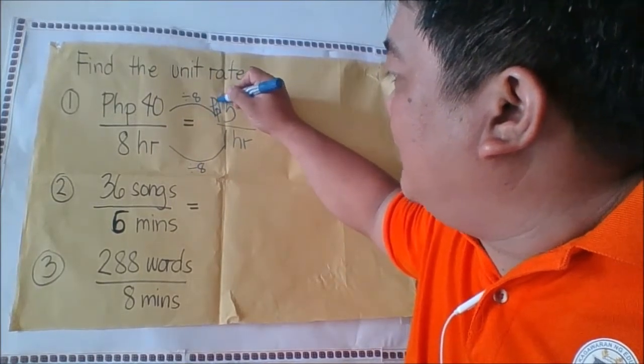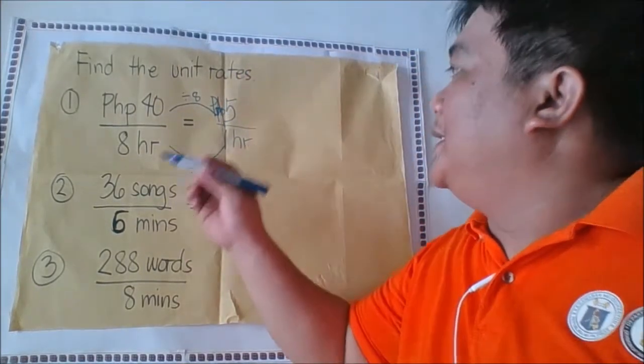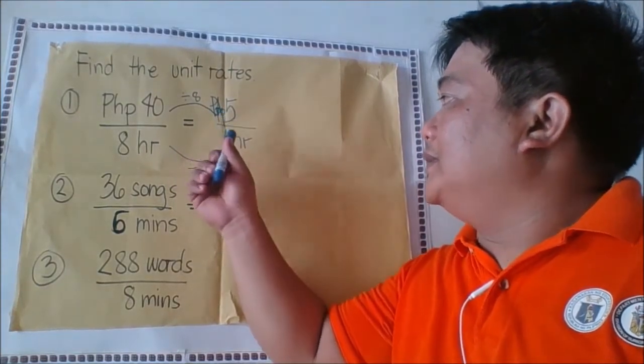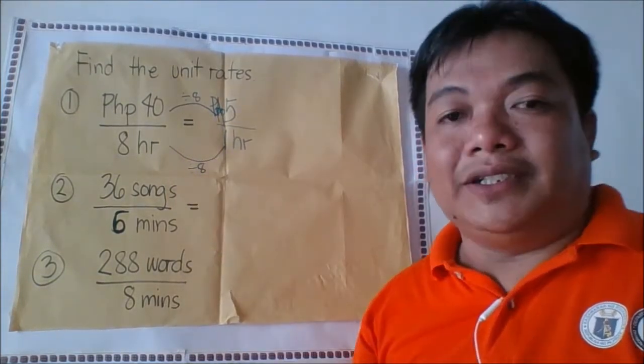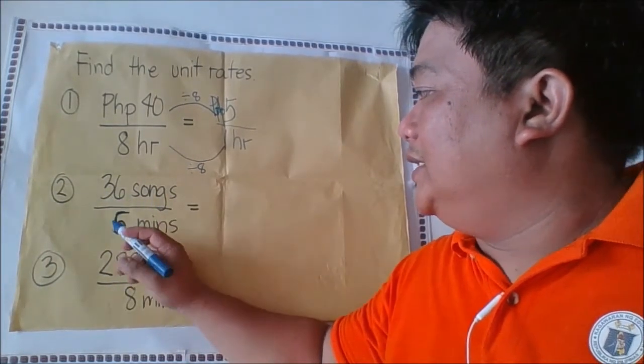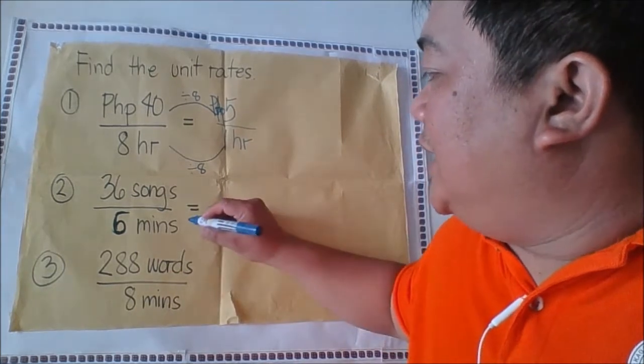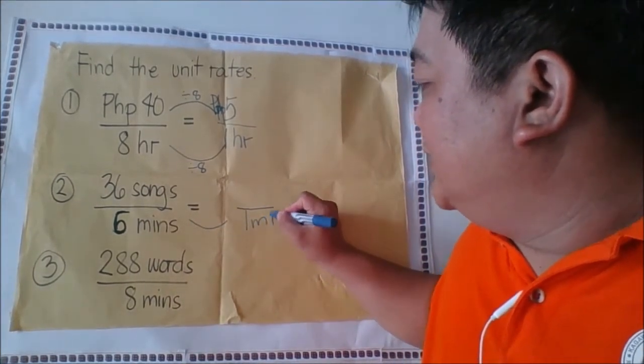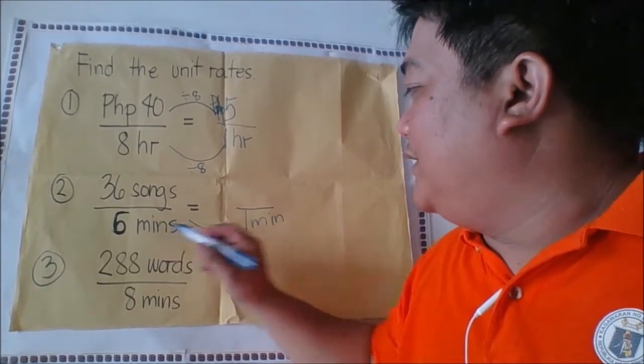Number two: 36 songs to 6 minutes. Again we will equate 6 minutes to 1 minute here. How did you find one minute? Simply divide by 6, so 6 divided by 6 is 1.